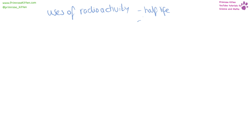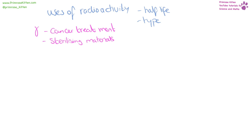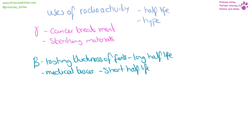The uses of radioactivity are varied, and the dose used depends on the half-life and type of radiation. Gamma radiation is used for cancer treatment and sterilising materials because it kills cells effectively — medical equipment needs a long half-life. Beta radiation is used for testing the thickness of materials such as foil, carpet, or cardboard: too much getting through means too thin, too little means too thick — this needs a long half-life for industrial use. A medical tracer needs a short half-life to leave the body quickly. Alpha radiation is used in smoke alarms and needs a long half-life.